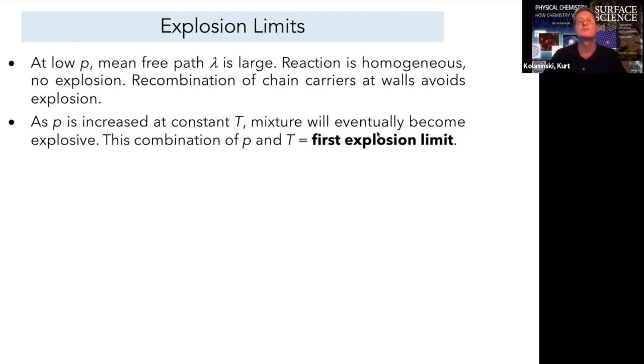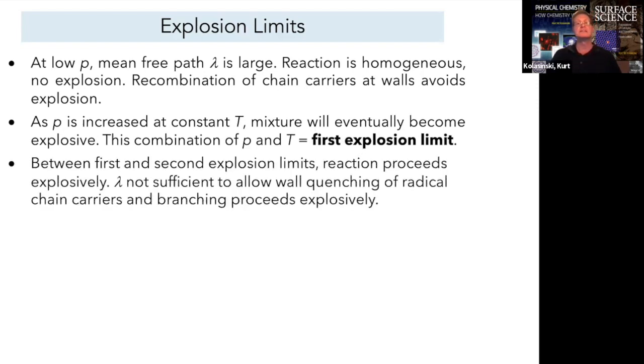Increasing the pressure will eventually hit that first explosion limit. What happens there is that the reaction will proceed explosively because the radicals are surviving. The mean free path is going down as the pressure goes up. Therefore, at some point, the radicals won't be able to hit the walls. They won't quench, and instead, they lead to more branching, exponential increase of radicals. Boom, the system goes explosive.